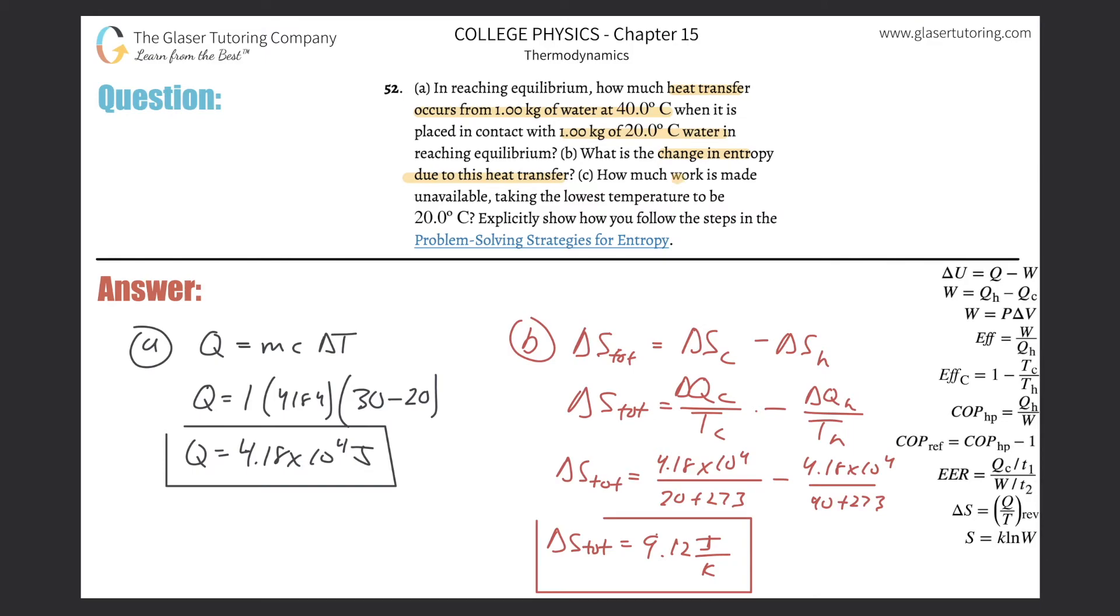So now it says how much work is made unavailable, taking the lowest temperature to be 20 degrees Celsius. Show how you follow the strategies. So here, basically just memorize this particular formula. It's going to be a variant of what I have over here. The work made unavailable is going to be this. So the change in entropy, the change in total entropy will be equal to the heat energy that's lost. In other words, the heat energy that's unavailable to do work. So I'm just going to relabel this as the work unavailable.